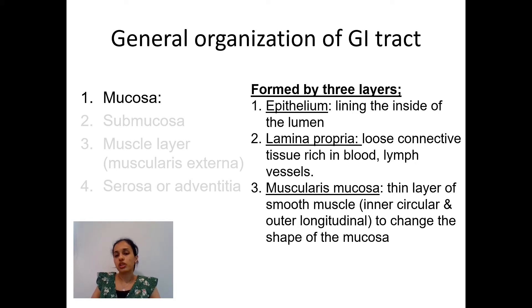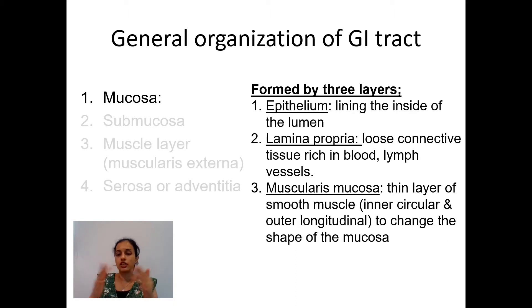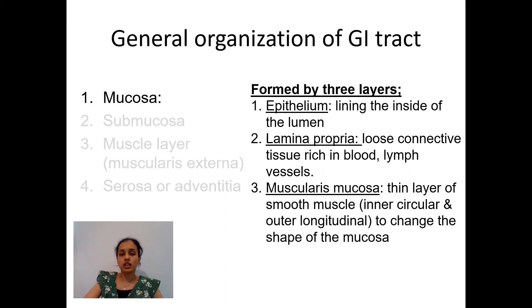The mucosa has three sub-layers: epithelium, lamina propria, and muscularis mucosa. The epithelium lines the inside of the lumen. The lamina propria is loose connective tissue rich in blood and lymphatic vessels. The muscularis mucosa is a thin layer of smooth muscle arranged in circular and outer longitudinal layers, which helps in changing the shape of the mucosa when needed.